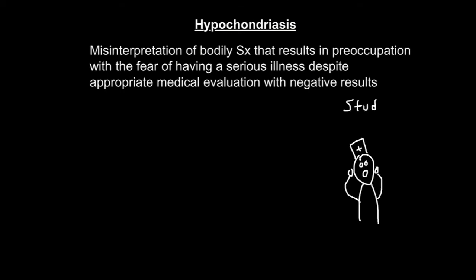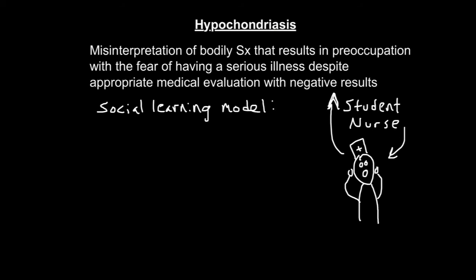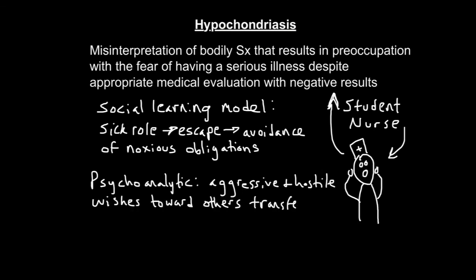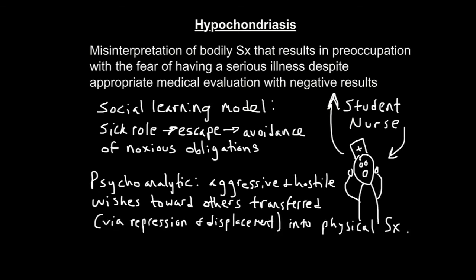Hypochondriasis is a misinterpretation of bodily symptoms that results in preoccupation with the fear of having a serious disease, despite appropriate medical evaluation with negative results. In the context of the social learning model, symptoms are viewed as a request for admission to the sick role made by a person facing seemingly insurmountable and insolvable problems. This offers an escape that allows the patient to avoid noxious obligations, to postpone unwelcome changes, and to be excused from usual duties. In the psychoanalytic perspective, aggressive and hostile wishes towards others are transferred through repression and displacement into physical complaints. The anger originates in past disappointments, rejections, and losses, but patients express their anger in the present by soliciting the help and concern of others and then rejecting them as ineffective. This is often a defense mechanism against guilt.